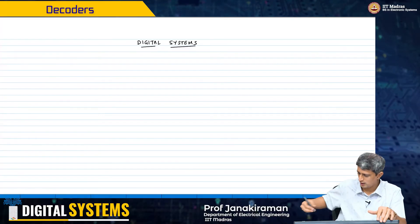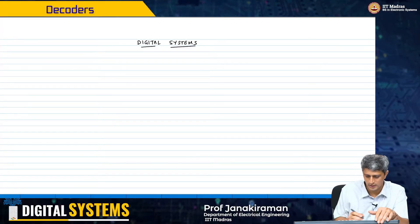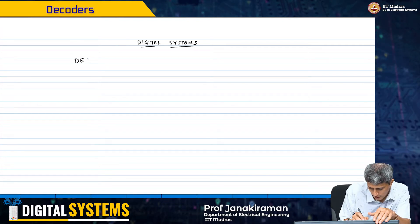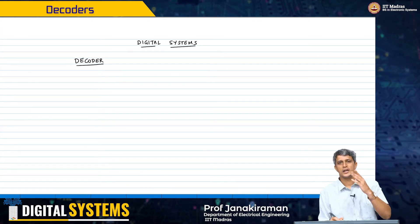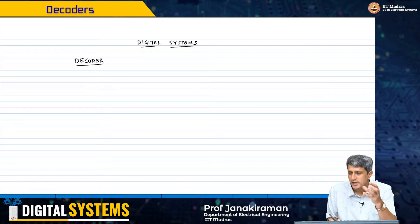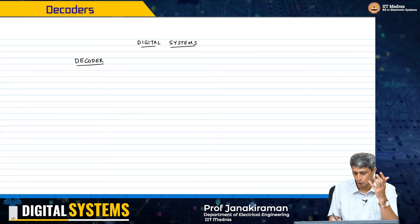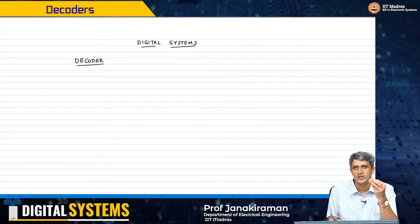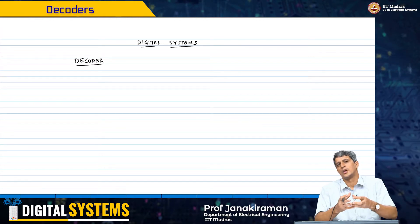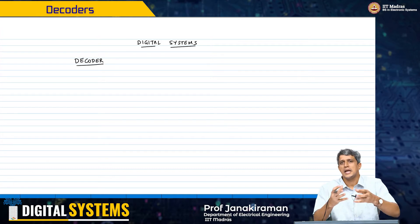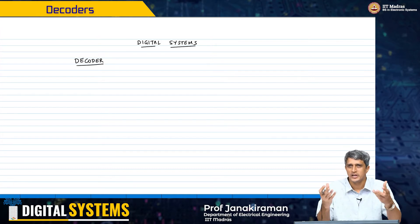Let us start with a very simple idea called a decoder. Let us first understand the application of this decoder and where it is used, and then we will be able to design and understand the functionality and the implementation better.